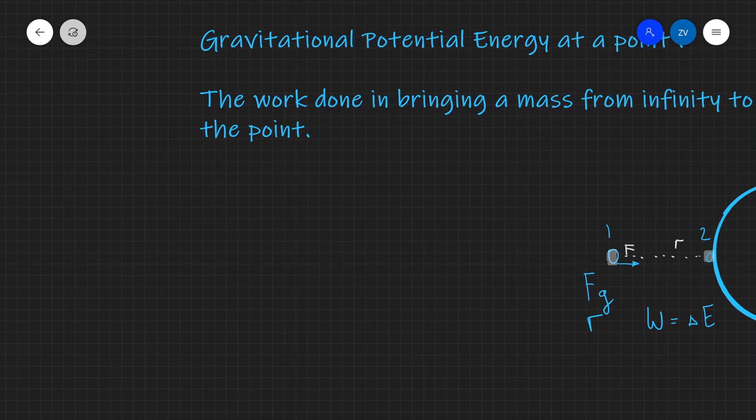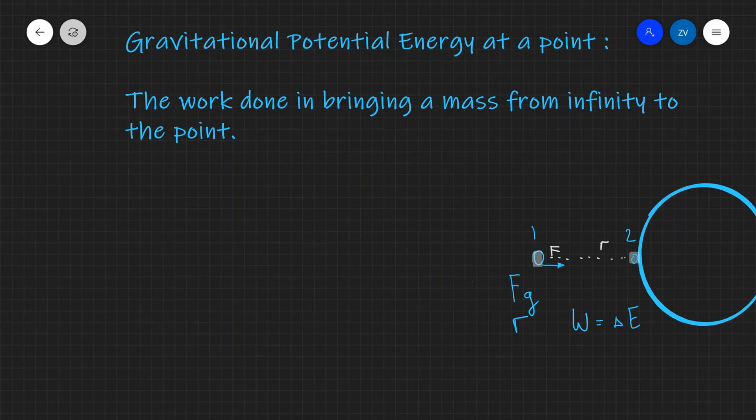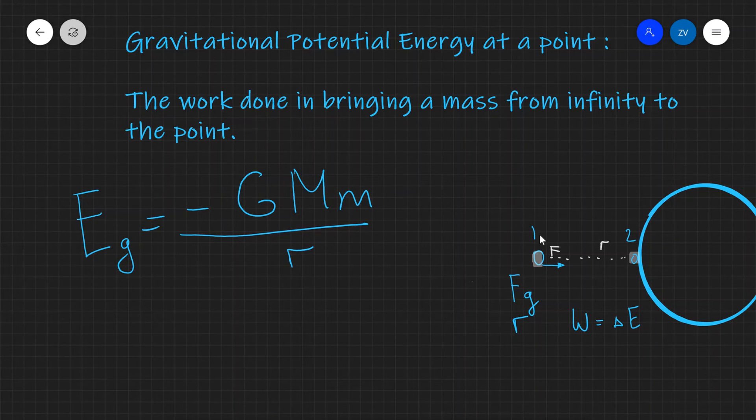Anyways, the formula for gravitational potential energy is the following. So let's say that the gravitational potential energy is E. I'm going to give it a little subscript like this. This is going to equal to minus GMm over r.